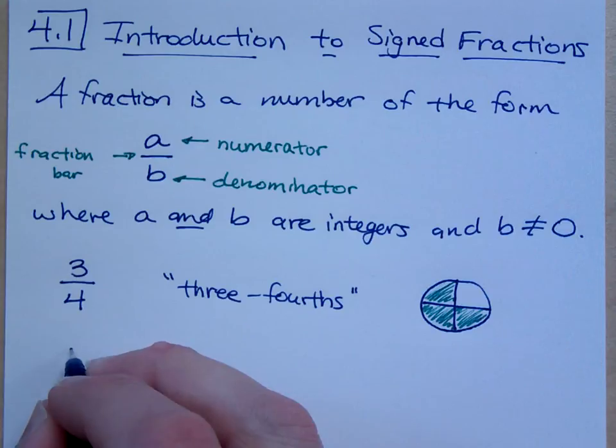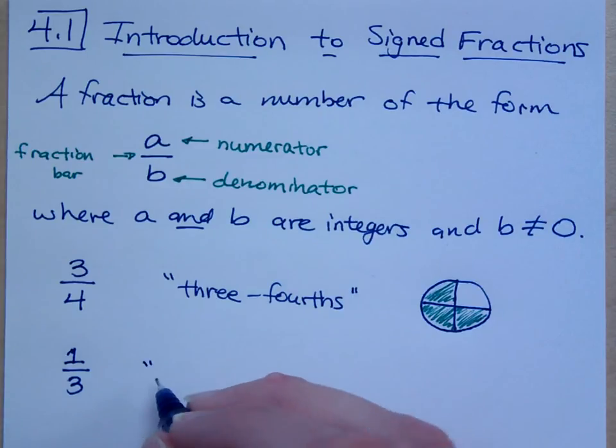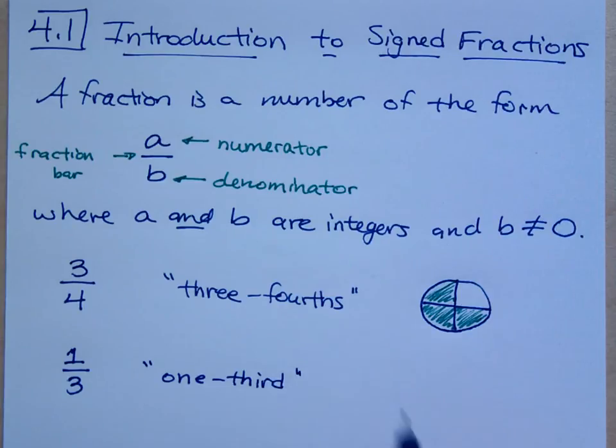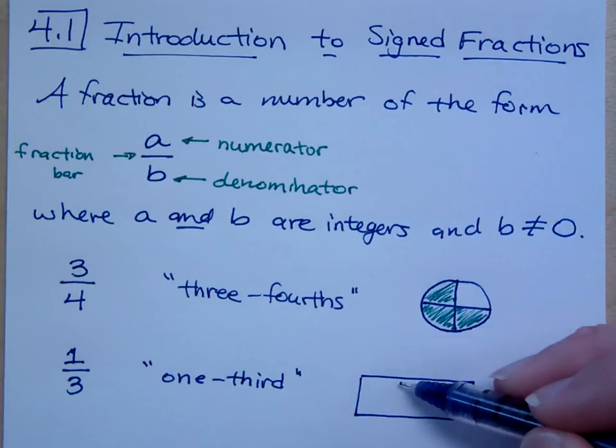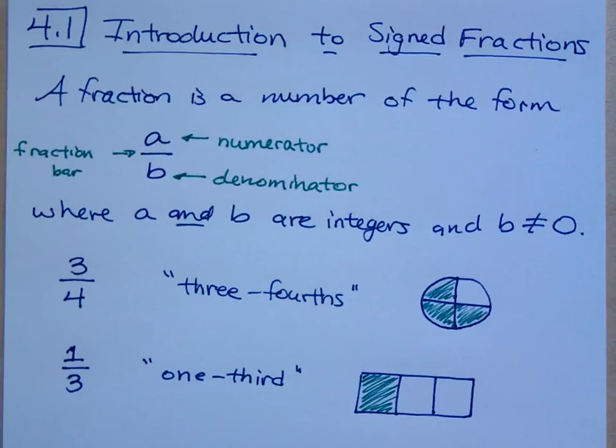If I were to have the fraction one over three, now we may say one over three, but how would you read this? You would read this as one-third. And if we were to draw some kind of shape and if we were to divide this into three equal parts, one-third would be just one piece of this guy shaded in, right? Everybody's with me so far.